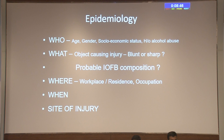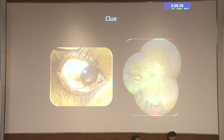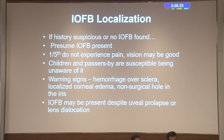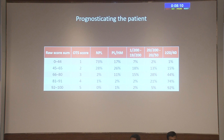When encountering an open globe injury, relevant history gives important clues. A case that appeared to be a closed globe injury on initial assessment turned out to have a foreign body inside on examination. Localizing the foreign body very precisely is critical for successful retrieval. Before taking the patient to the operating room, it is essential to prognosticate, as patients and families need realistic expectations especially given the poor prognosis that often applies.